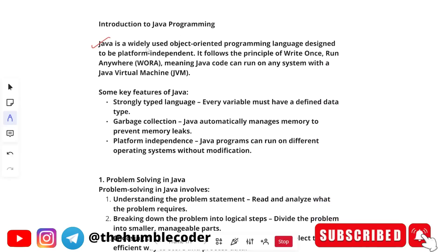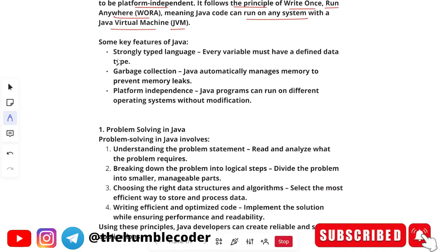What is Java? Java is a widely used object-oriented programming language designed to be platform-independent. It follows the principle of Write Once Run Anywhere, also called WORA, meaning Java can run on any system with the Java Virtual Machine (JVM). Some key features of Java: it is a strongly typed language — every variable must be defined with a data type; it has garbage collection — Java automatically manages memory to prevent memory leaks; and it is platform-independent — a Java program can run on different operating systems without any modifications.